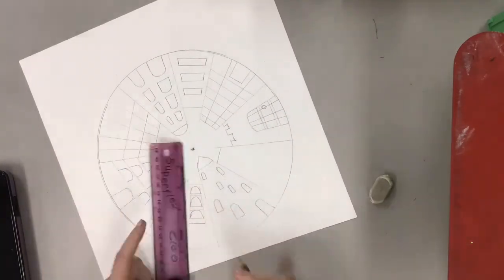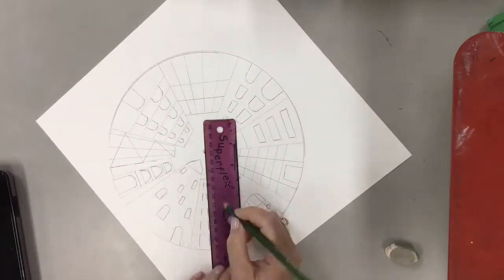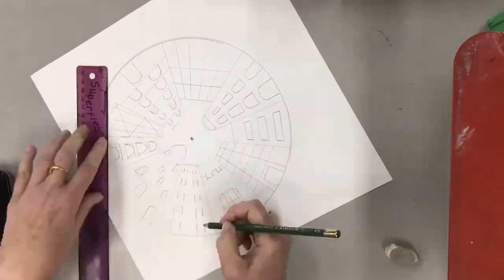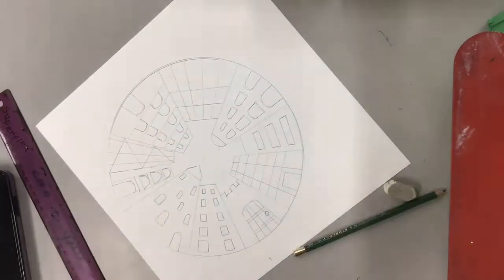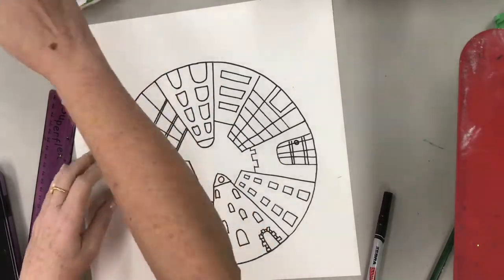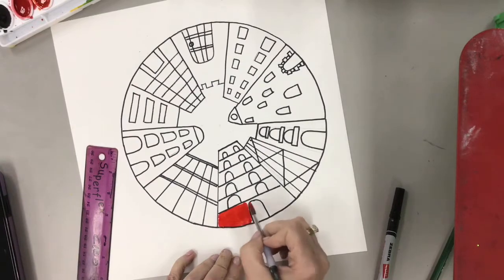All right, so almost done. Once you have put in all the details of your buildings, then you're gonna outline it with a zebra pen or sharpie. Make sure it's a permanent marker though.